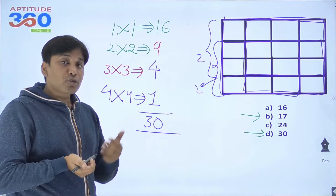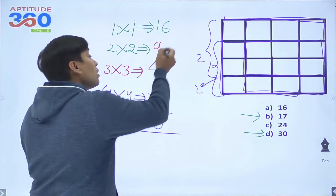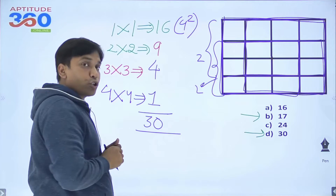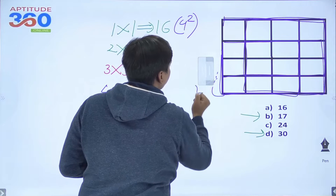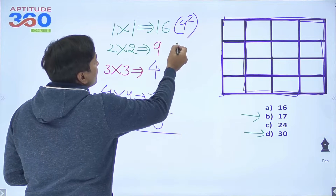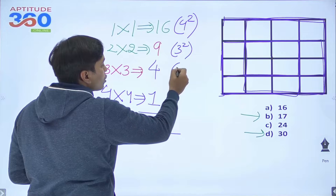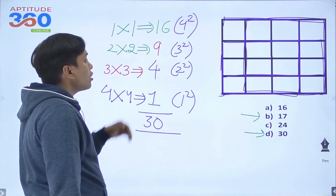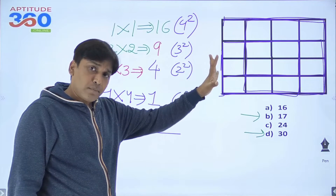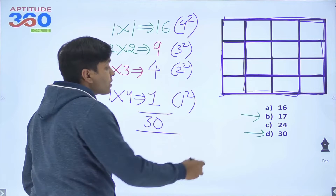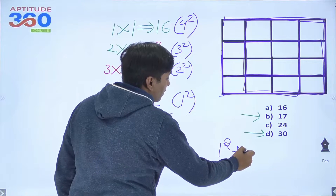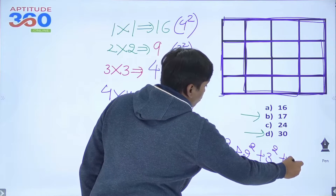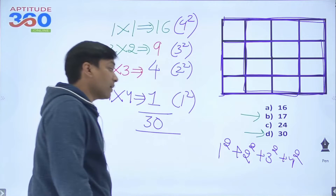Let's see what the shortcut is. This 16 is 4 squared, this 9 is 3 squared, 4 is 2 squared, and 1 is 1 squared. So rather than counting them individually, what we should be doing is finding 1² + 2² + 3² + 4², and the answer will be 30.